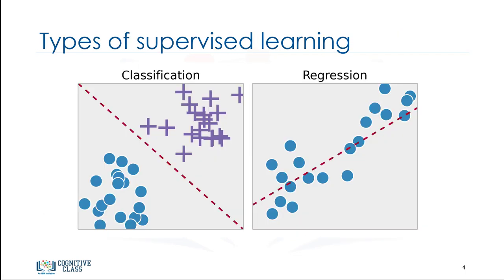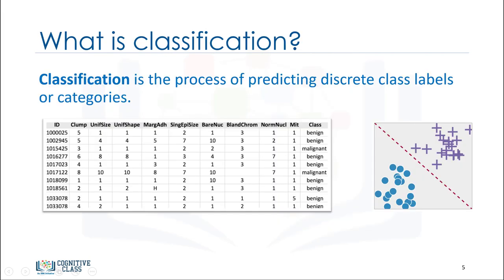There are two types of supervised learning techniques. They are classification and regression. Classification is the process of predicting a discrete class label or category.